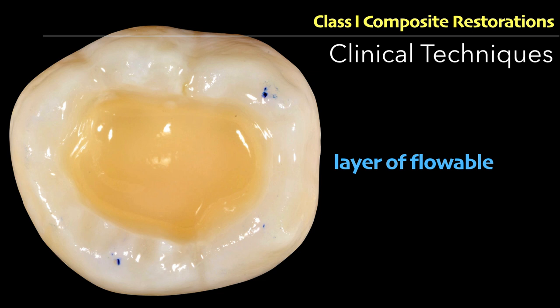The most important thing is how to fill the box. Apply flowable composite — about one millimeter increment — at the base. Flowable is used because it can flow everywhere, adapt well, and you can see there are no voids, no bubbles, no shrinkage, and no debonding. Then build the remaining cavity in two-millimeter increments. Two-millimeter increments are used to avoid polymerization shrinkage. When curing, increase the light intensity stepwise — using high-intensity curing light immediately will cause shrinkage and sensitivity; gradual stepwise intensity avoids polymerization shrinkage and post-operative sensitivity.